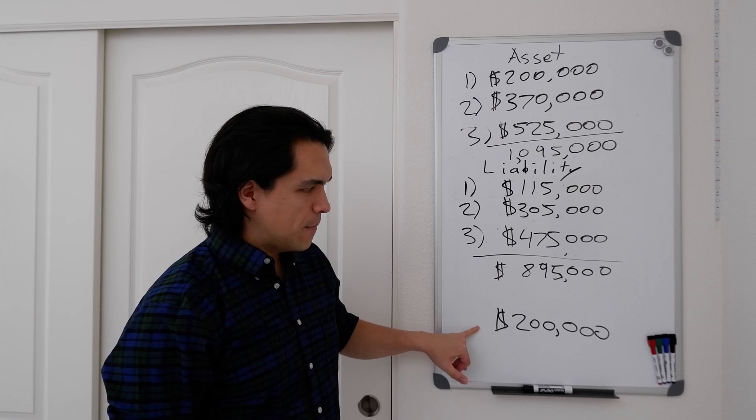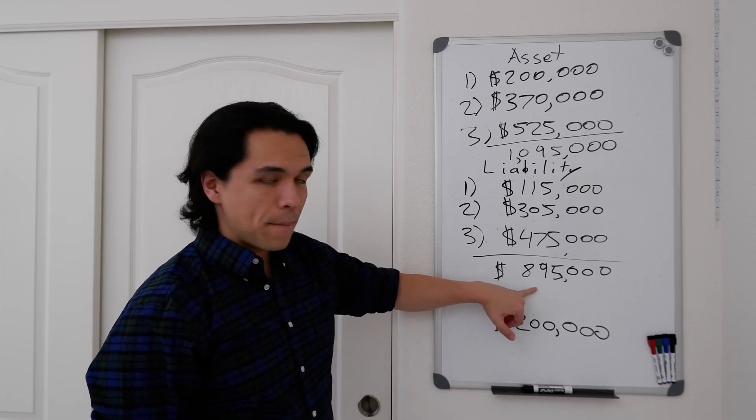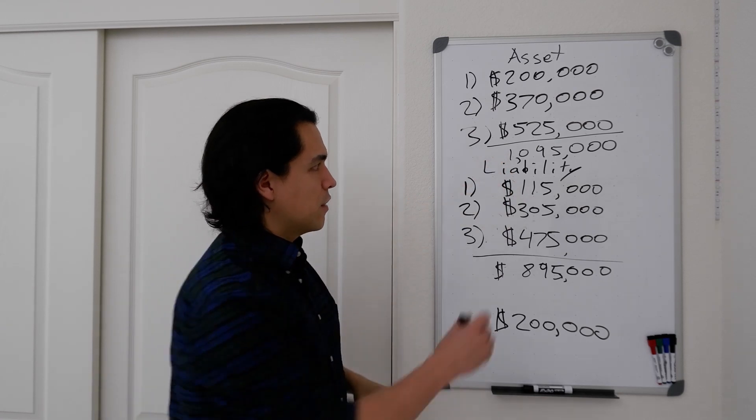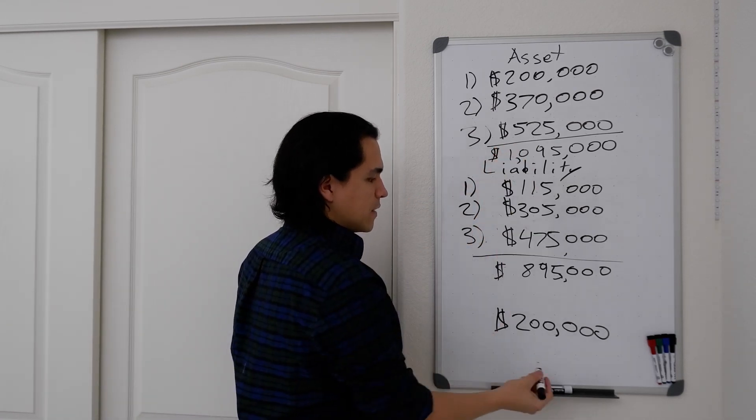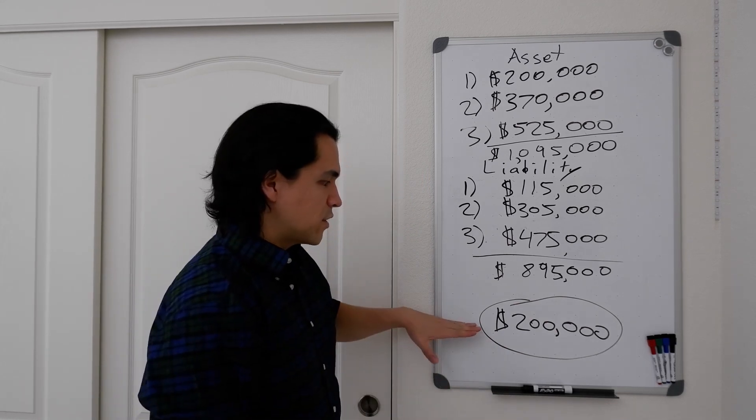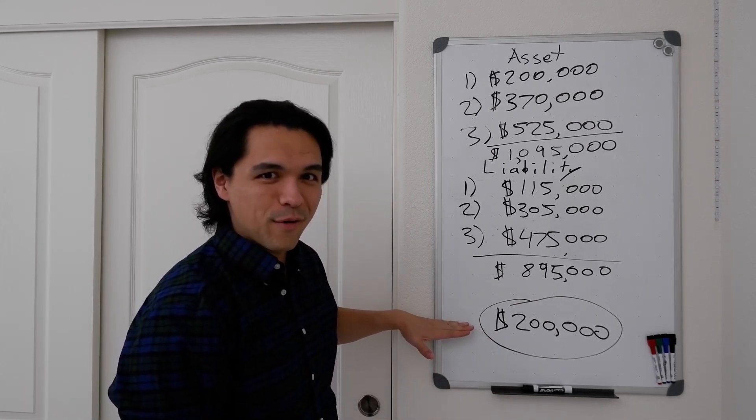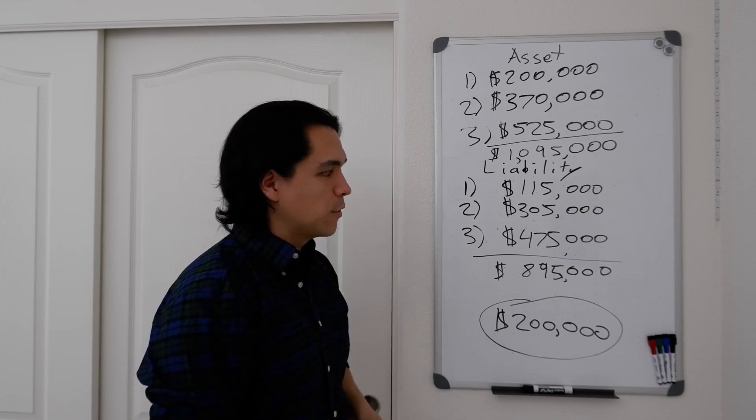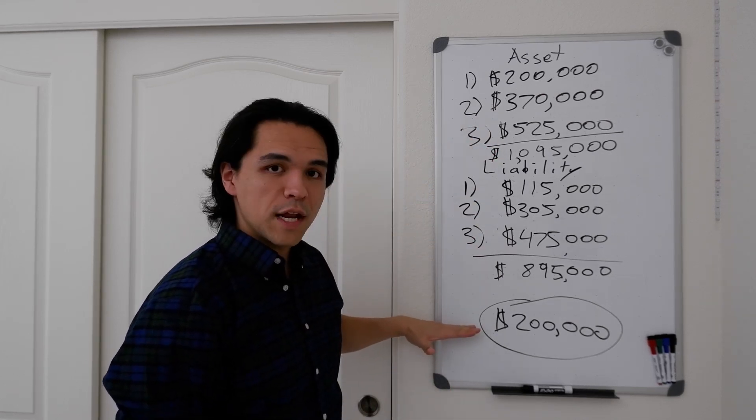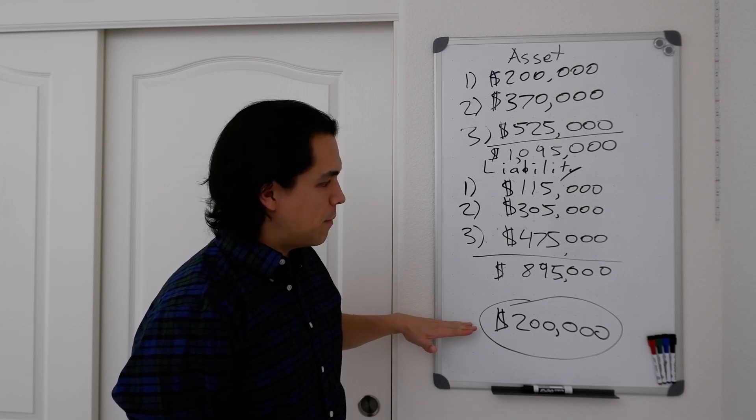This is really key because this is a big number in liabilities, but there's assets here that go with these. And these assets help generate this net worth. When I started here, the net worth number was zero, right? I had no properties. But in acquiring these properties, this number has been able to grow quite a bit.